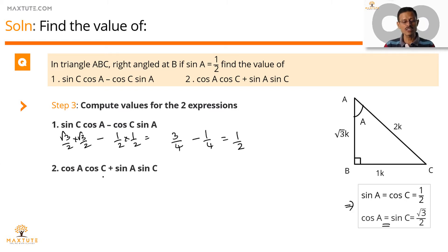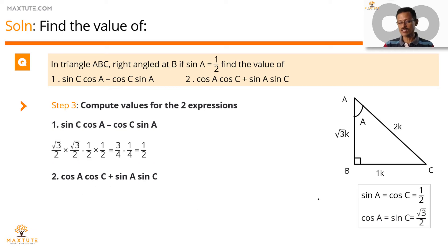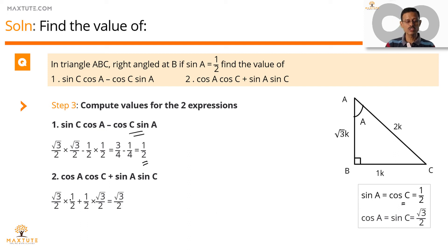The second expression is cos A·cos C plus sin A·sin C. Cos A equals root 3 by 2 and cos C equals 1 by 2, so that term is root 3 by 2 times 1 by 2. Sin A equals half and sin C equals root 3 by 2, so the second term is also half of root 3 by 2. Adding both: half of root 3 by 2 plus half of root 3 by 2 equals root 3 by 2. So the value of the second expression is root 3 by 2.